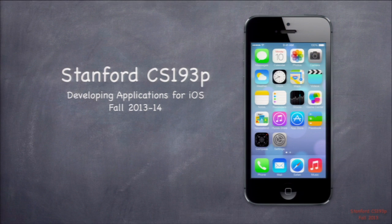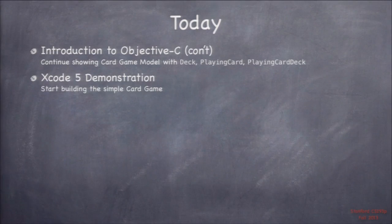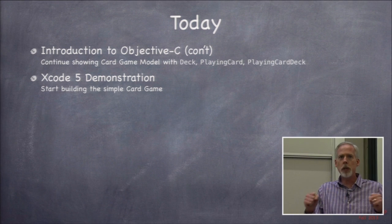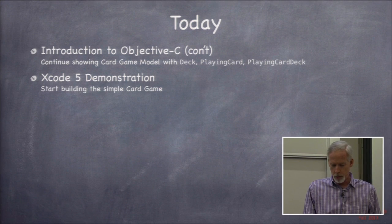Welcome to lecture number two of CS193P for fall 2013-2014. Today we'll have some slides at the beginning, then a big demo that synthesizes everything from the first two lectures — we're going to start building our card game. This card matching game will be our substrate for the first two weeks of learning Objective-C, Xcode, and how iOS hooks up the controller, view, and model to make a UI.